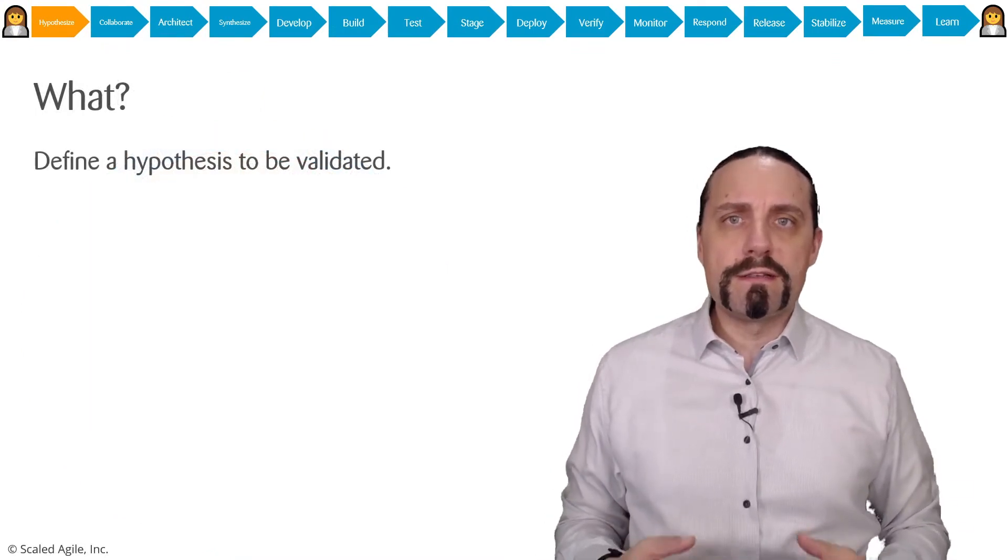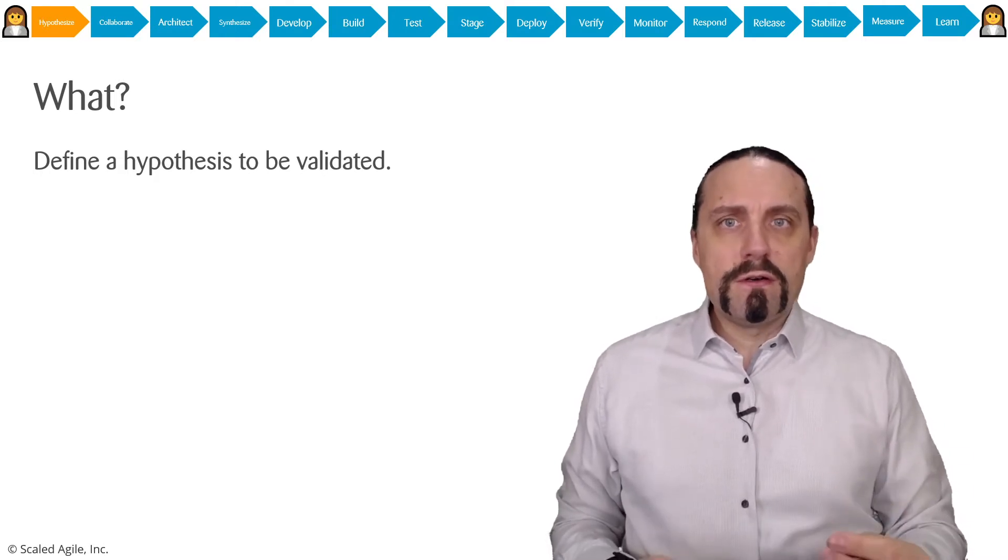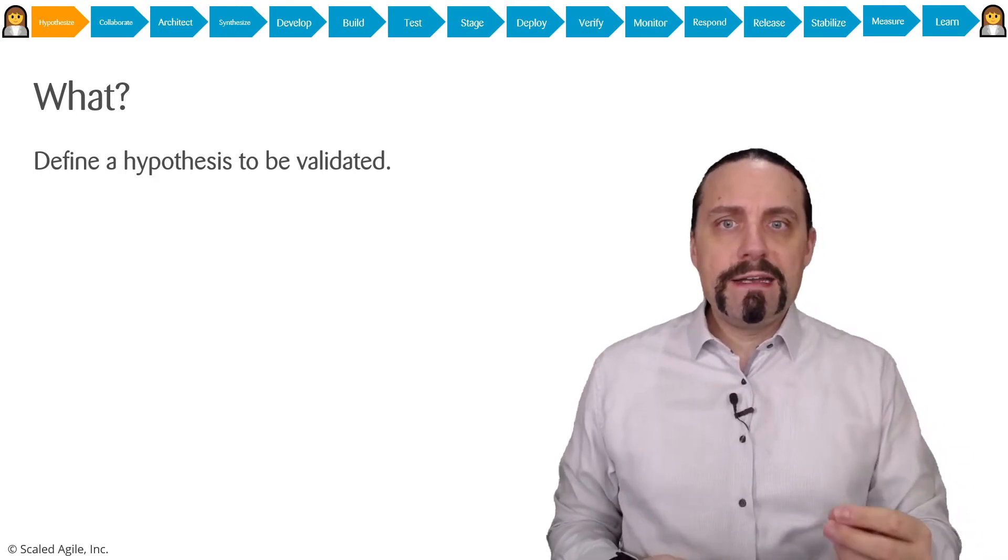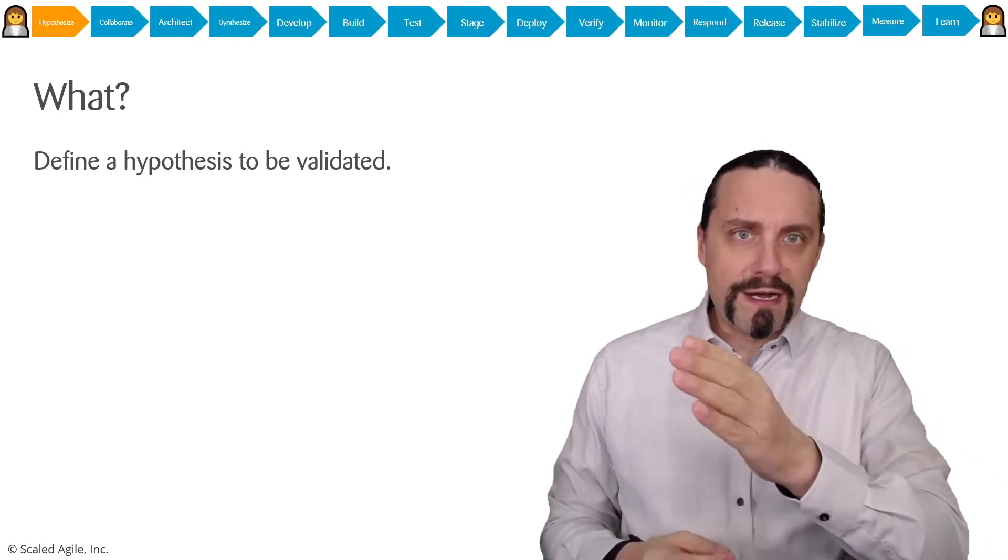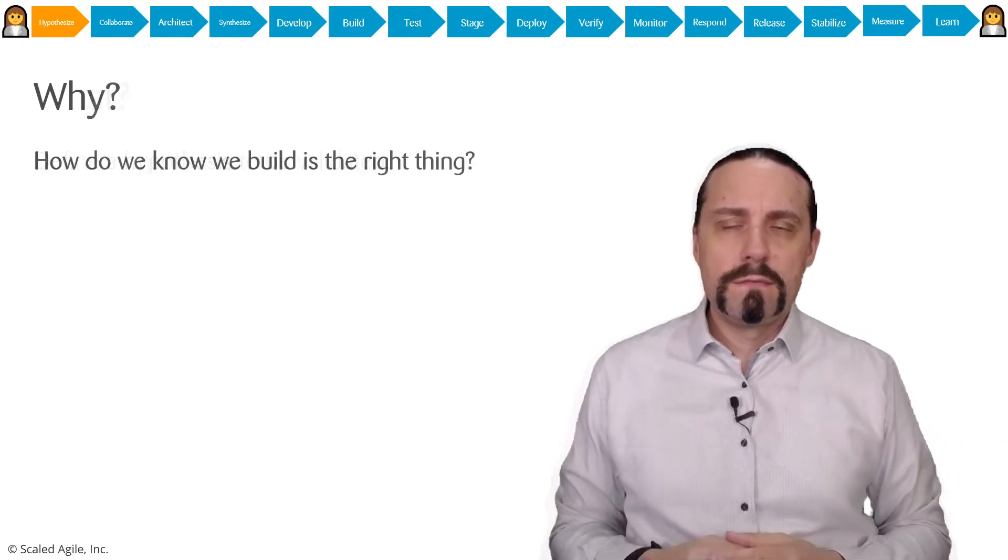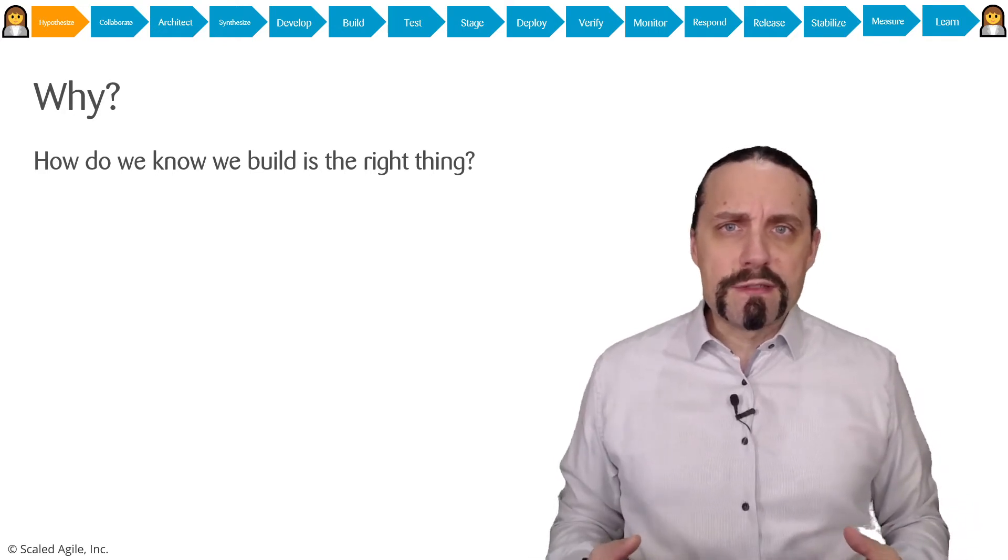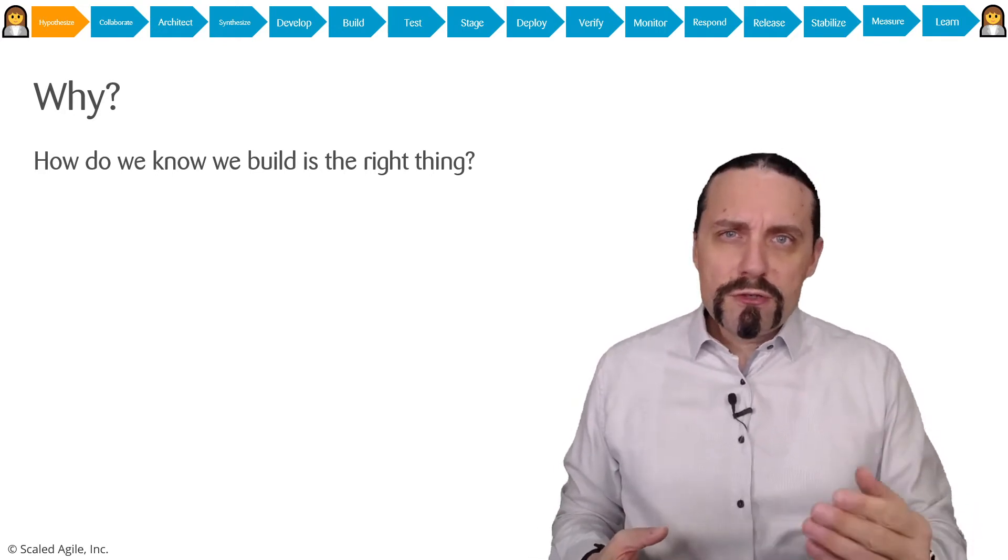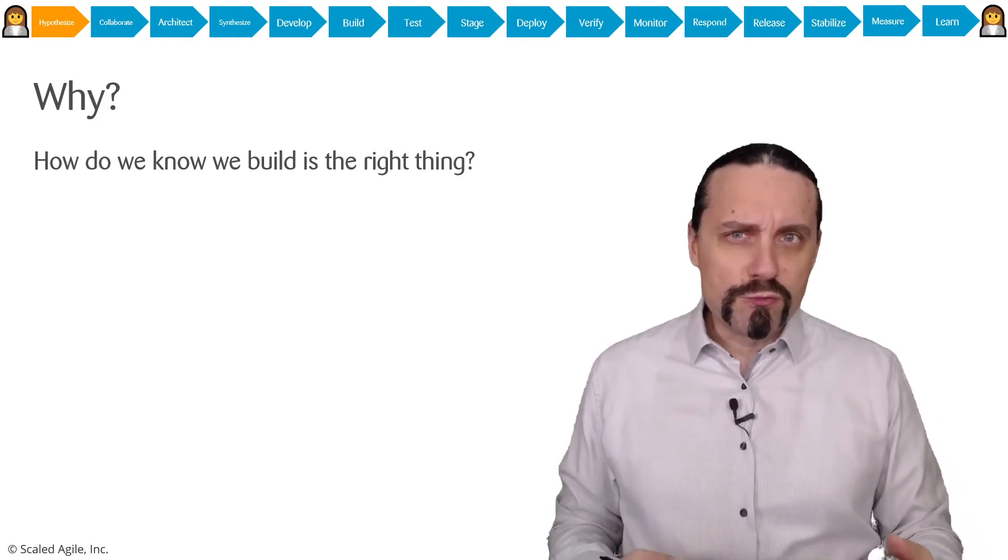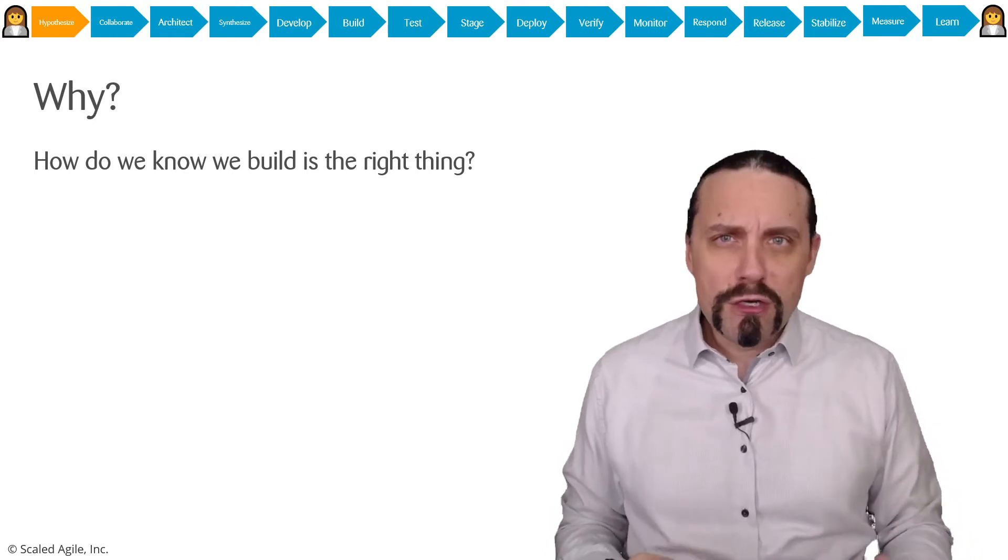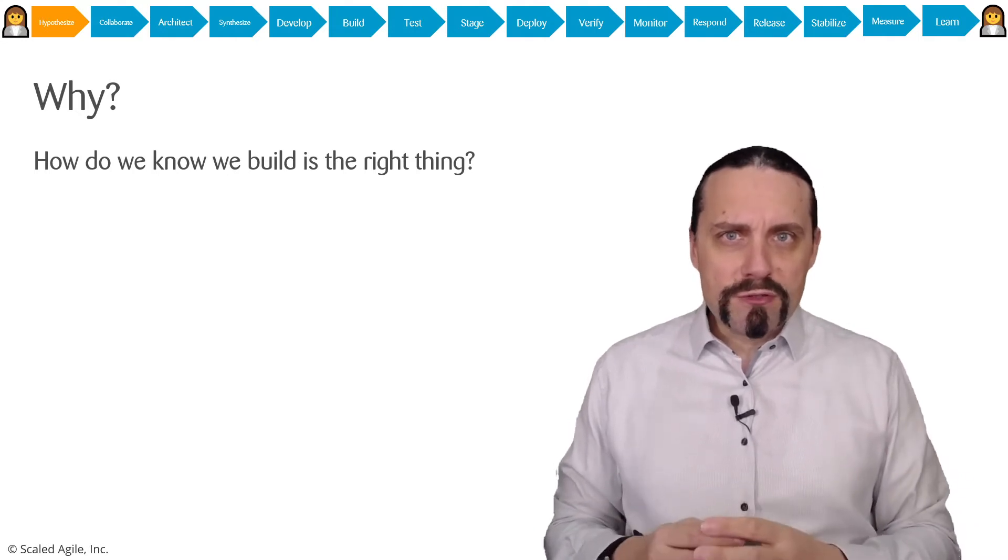What are we going to do in this process step hypothesis? The purpose of this process step is to define a hypothesis which we can validate throughout the whole process. So why should we create a hypothesis and validate a hypothesis? Because do you know that you are building the right thing? Are you sure that you are building the right thing? And how do you know that you are building the right thing?